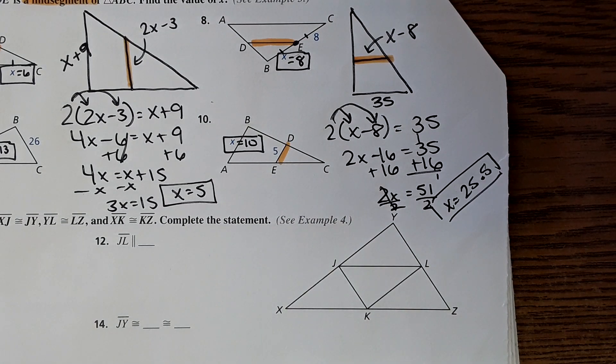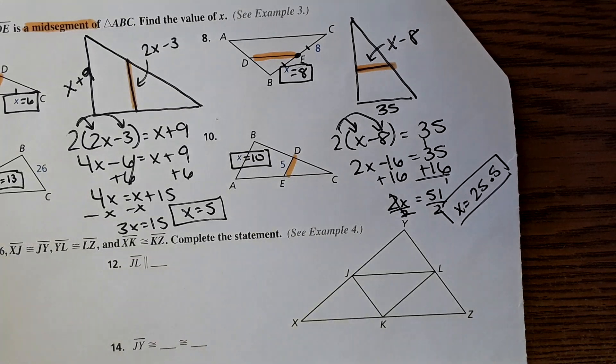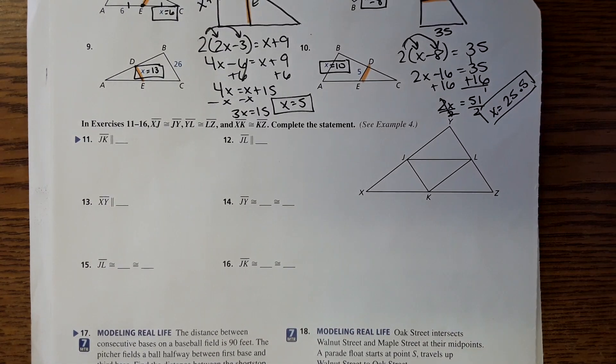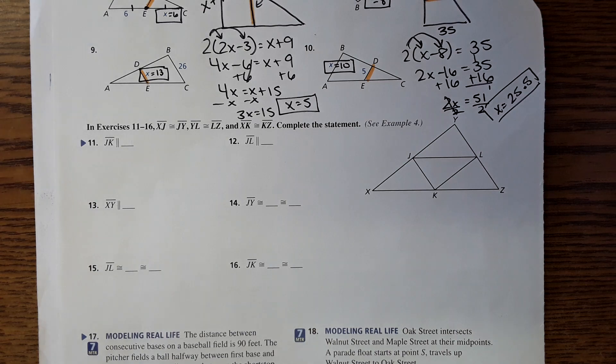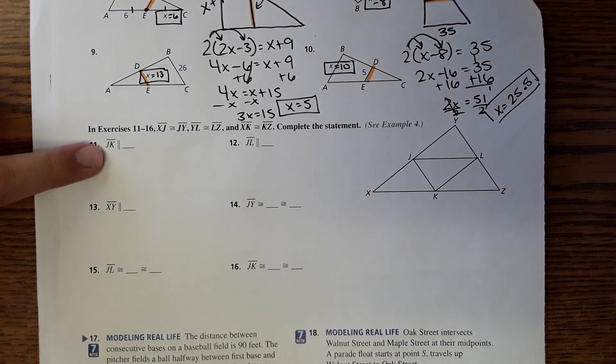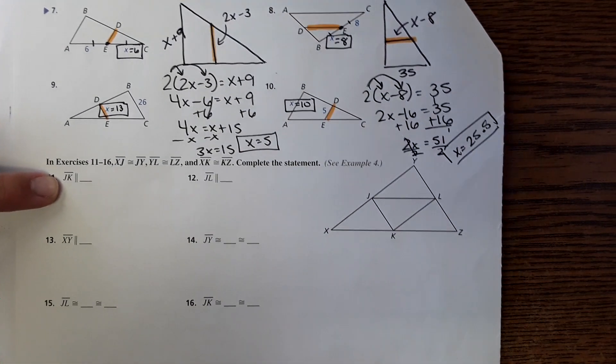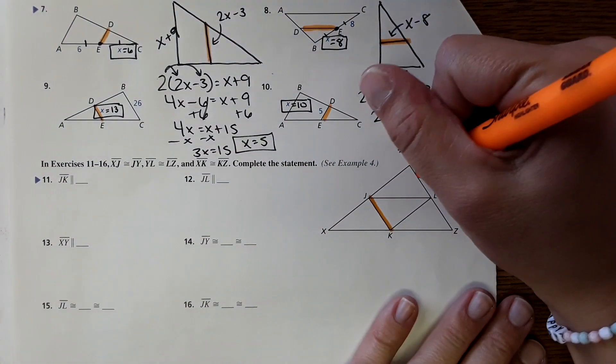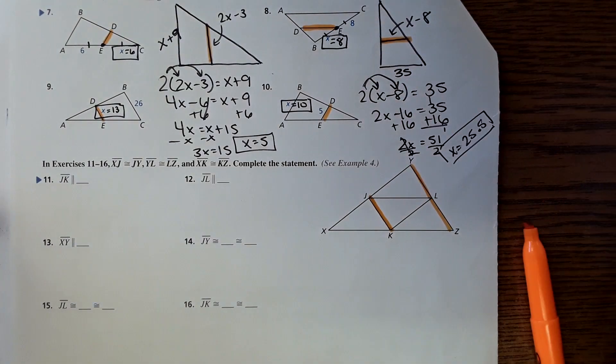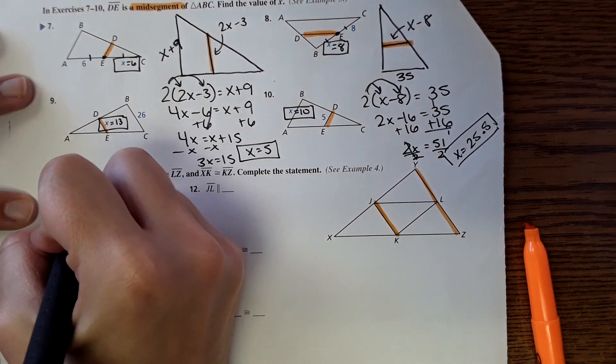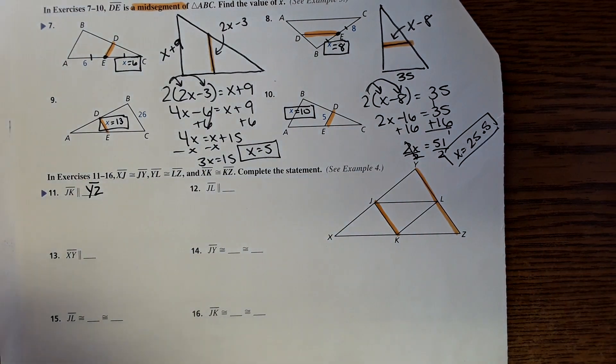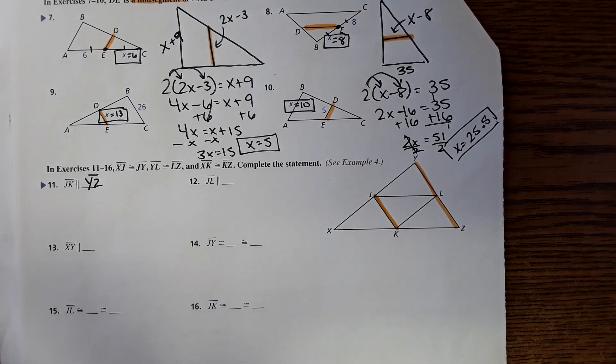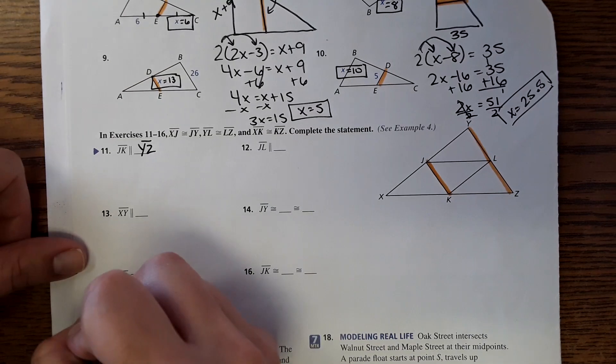And then the next set of problems wants to know what segments are parallel to what. So here is asking what is parallel to JK. So I find JK right here and the line parallel to that would be this. And then before I draw all over this I want to skip to number 15 - I think that's right - no, okay I lied, 16.